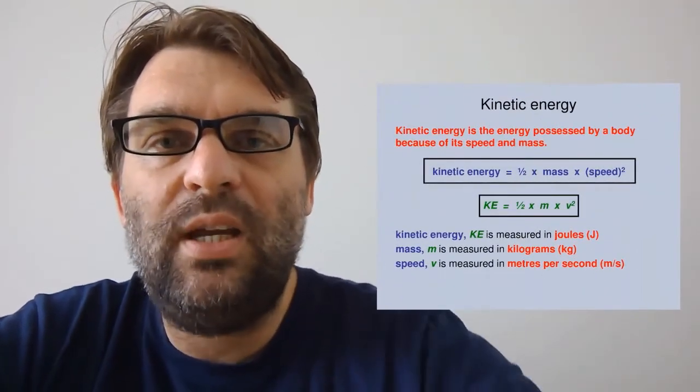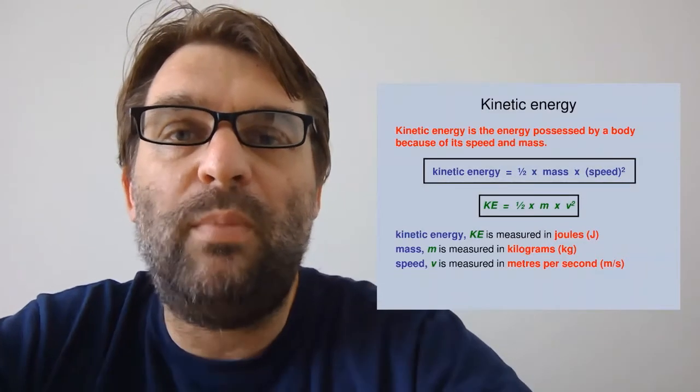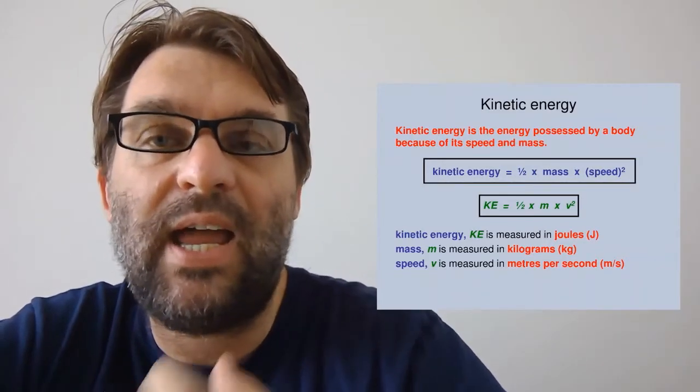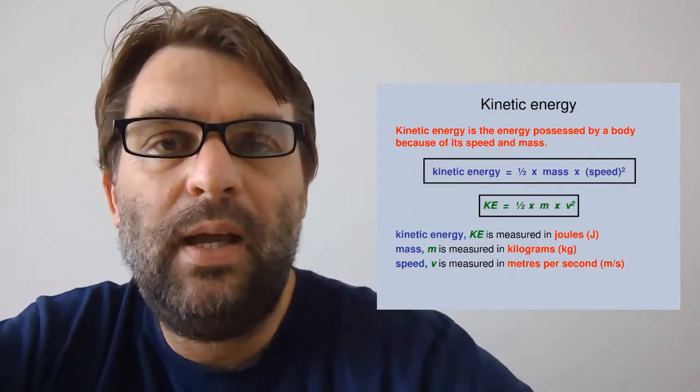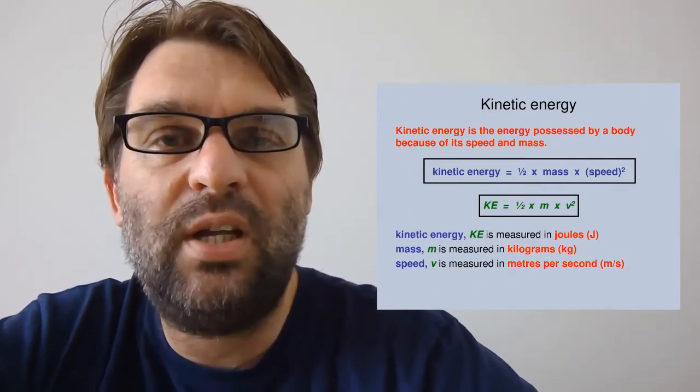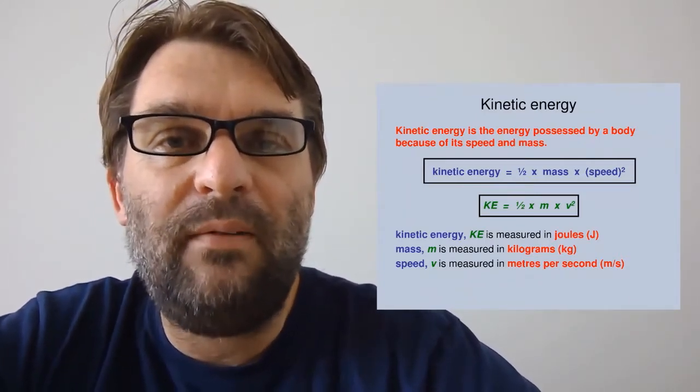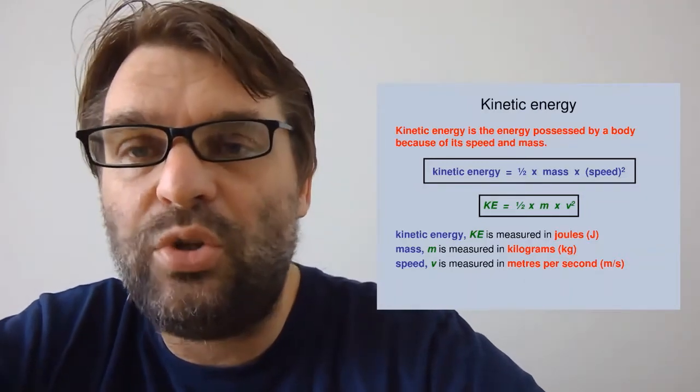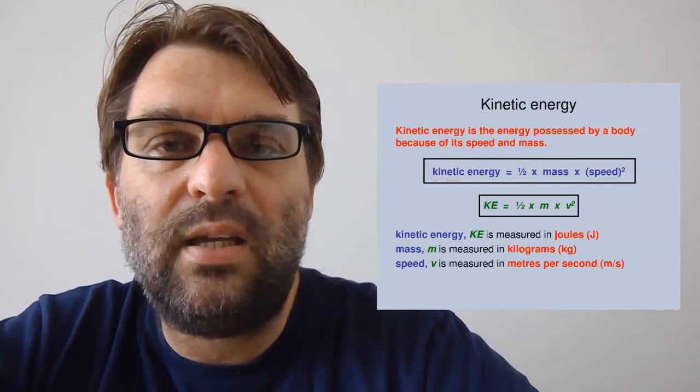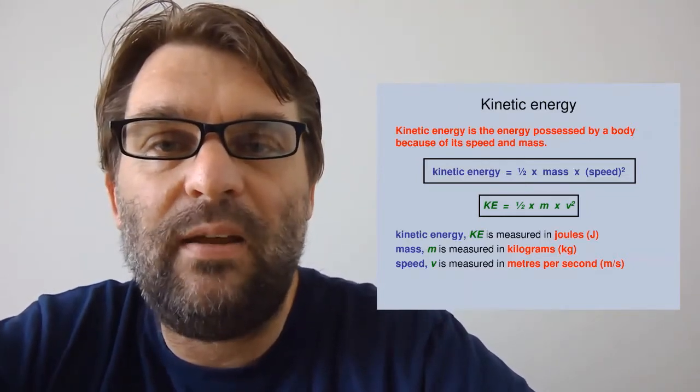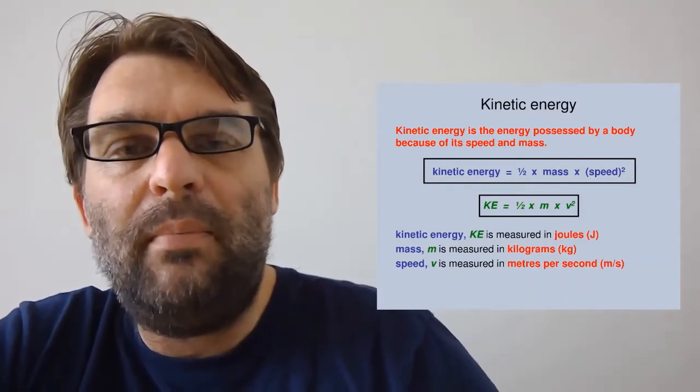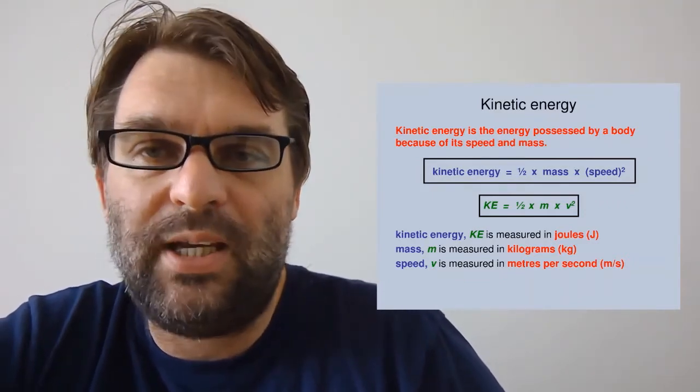And kinetic energy is the energy of movement. It's basically the energy an object has because it has mass and a velocity or speed. And kinetic energy from the equation is half mv squared, where KE is the kinetic energy in joules, because it's energy. Mass is measured in kilograms, and the speed v, velocity v, which are interchangeable, are in meters per second.